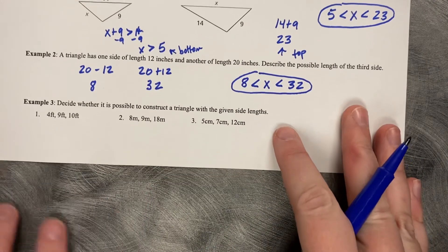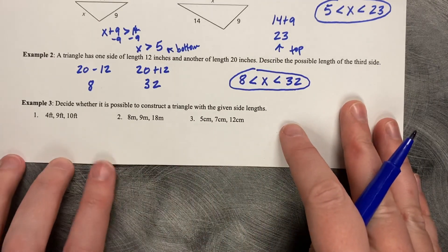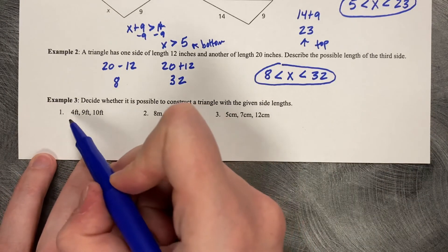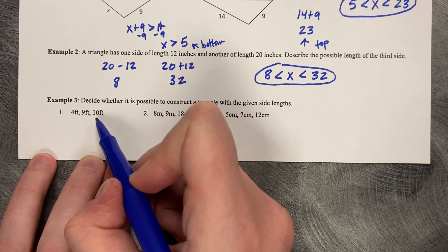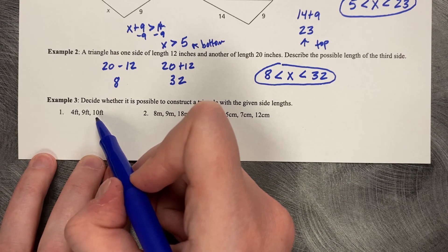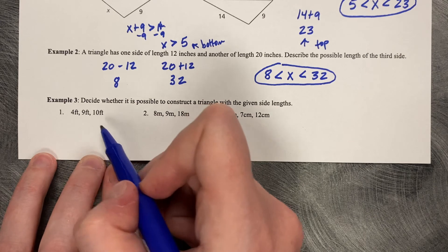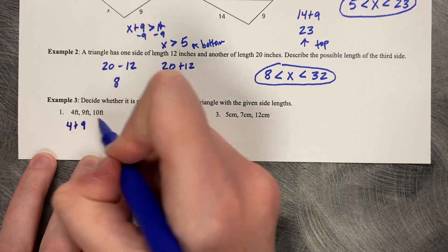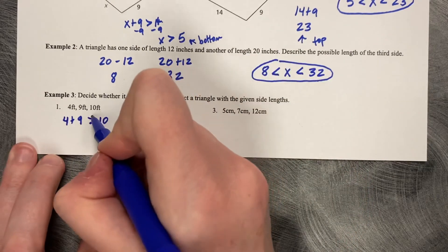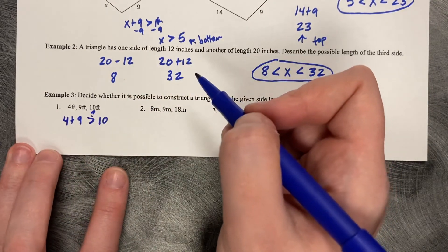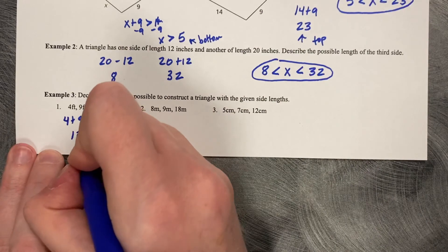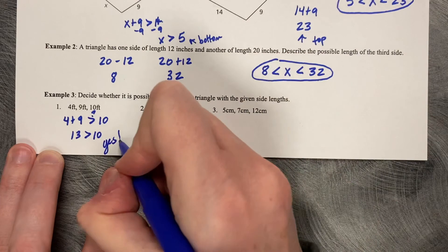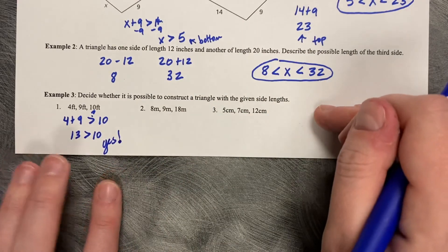And then our last example here, example number 3. Decide whether it's possible to construct a triangle given the side lengths. 4, 9, and 10. So what you need to do is pick your smaller two sides and see if the sum is greater than the third side. So is 4 plus 9 greater than 10? Is that a question mark? 4 plus 9 is 13. 13 is greater than 10. So yes.